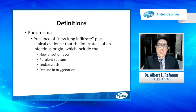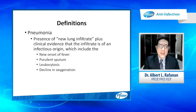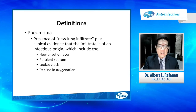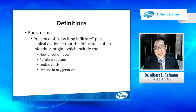So what is pneumonia? Pneumonia is the presence of a new lung infiltrate, plus there should be clinical evidence that the infiltrate is of an infectious origin. This usually includes new onset of fever, purulent sputum, leukocytosis, or a decline in oxygenation.